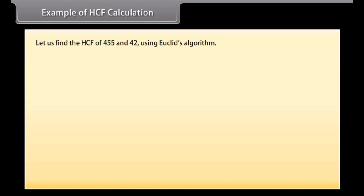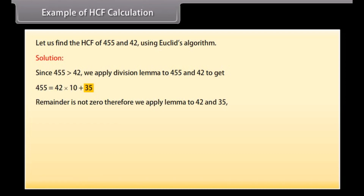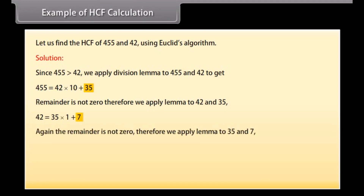Example of HCF calculation. Let us find the HCF of 455 and 42 using Euclid's algorithm. Since 455 is greater than 42, we apply the division lemma to 455 and 42: 455 equals 42 into 10 plus 35. The remainder is not 0, so we apply the lemma to 42 and 35: 42 equals 35 into 1 plus 7. Again the remainder is not 0, so we apply the lemma to 35 and 7: 35 equals 7 into 5 plus 0.